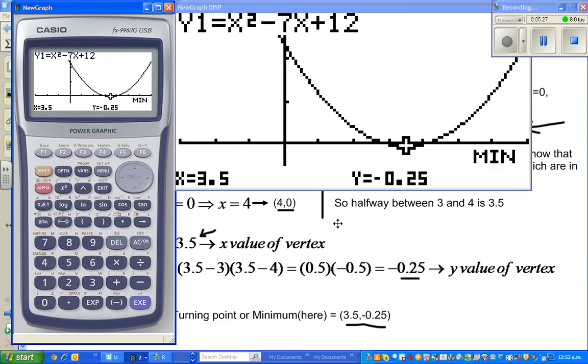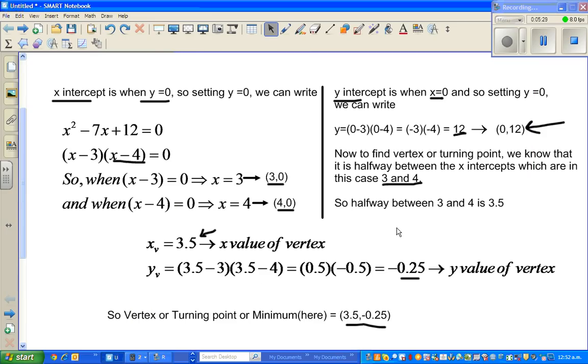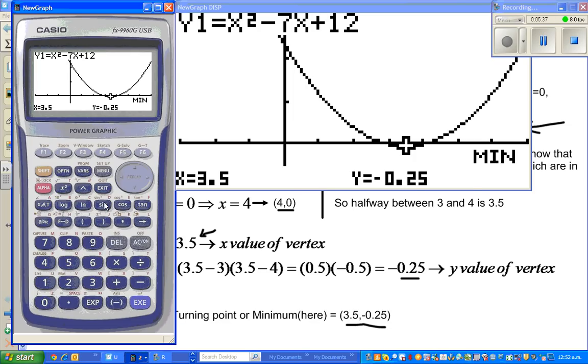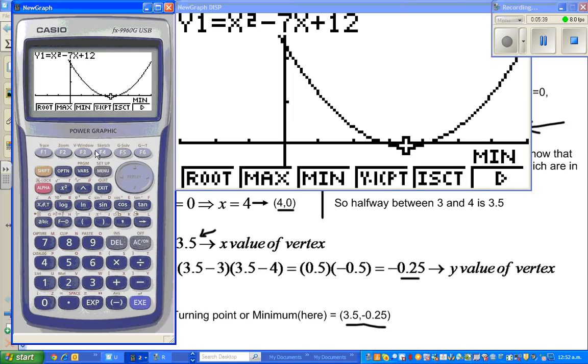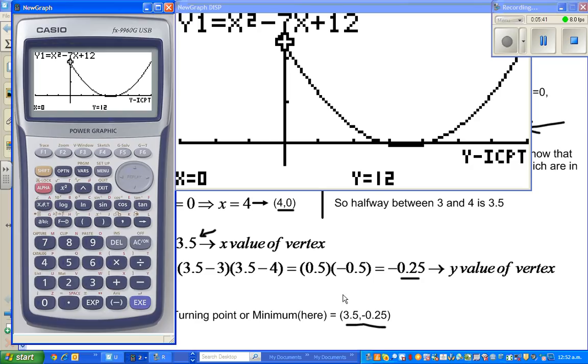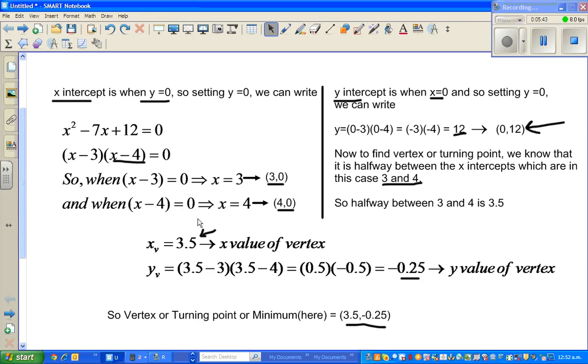I think I did one mistake. So let me go back. This should have been (0,12). That's right. So let us check. Y-intercept (0,12), that's right. So we have checked the x-intercept, the y-intercept, and the vertex. Thank you very much.